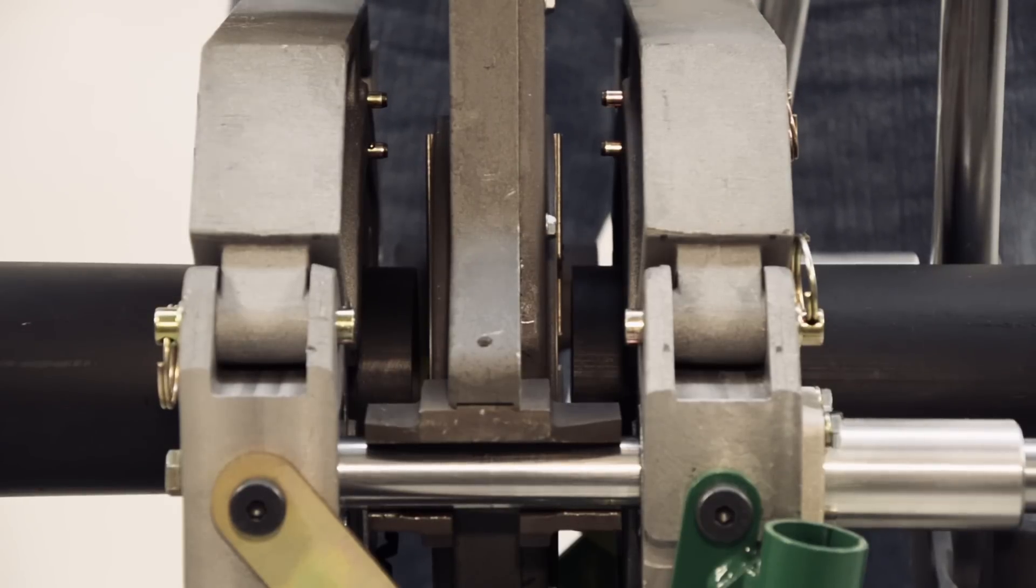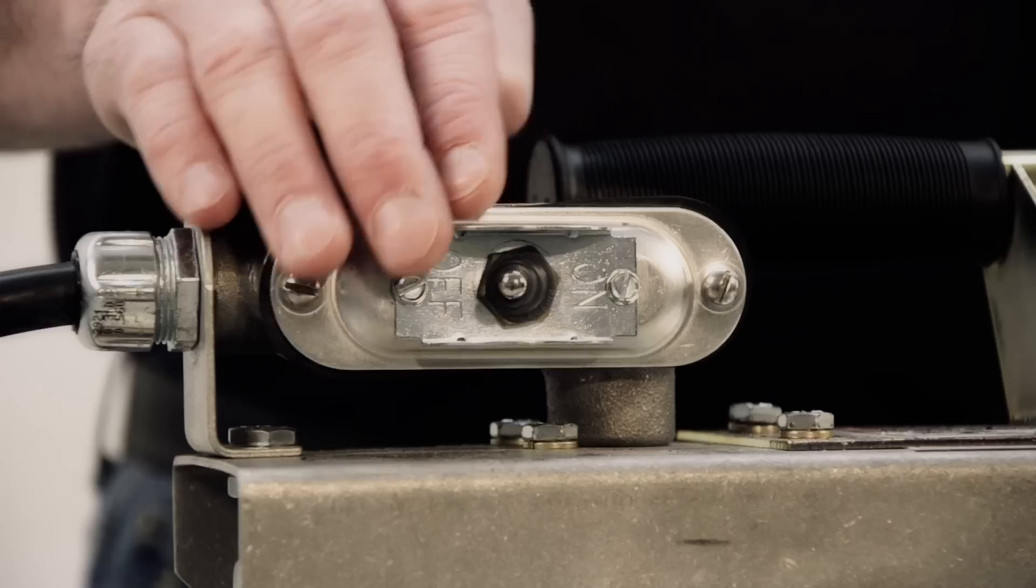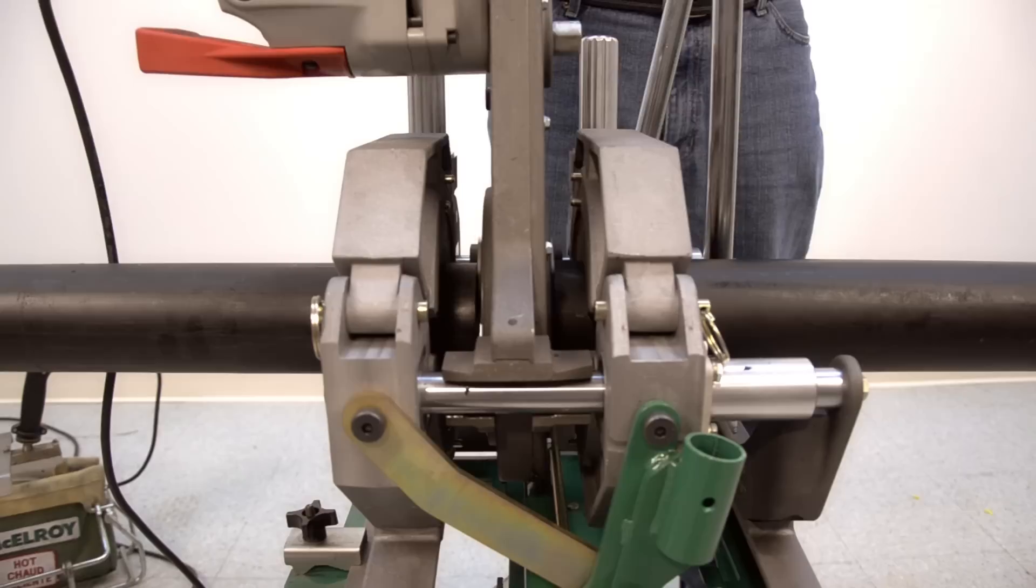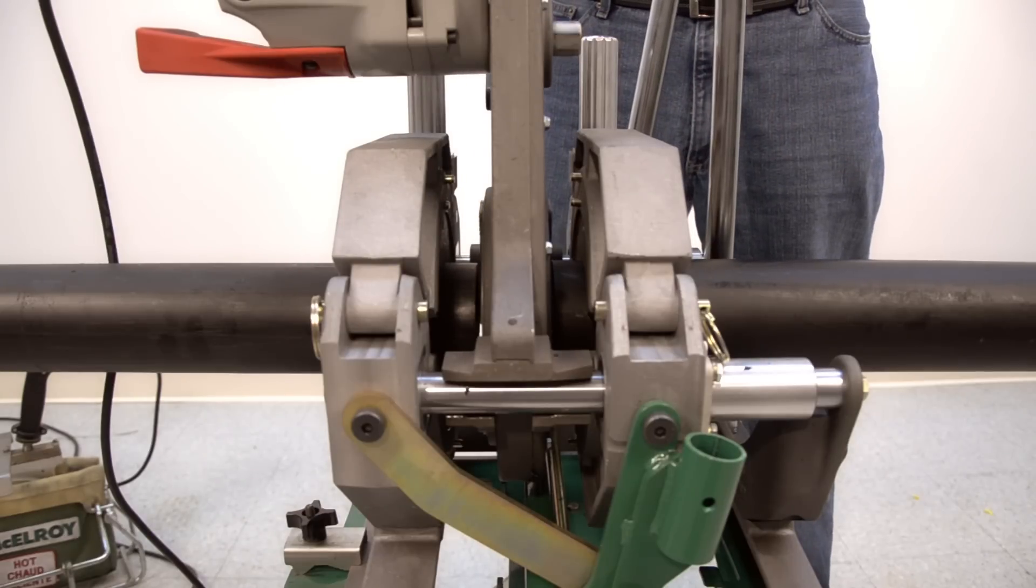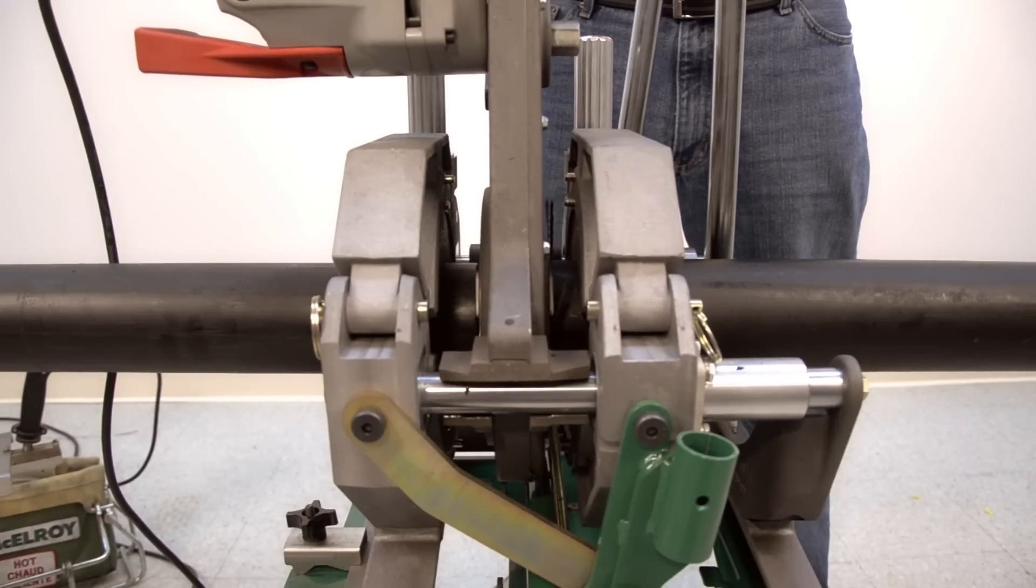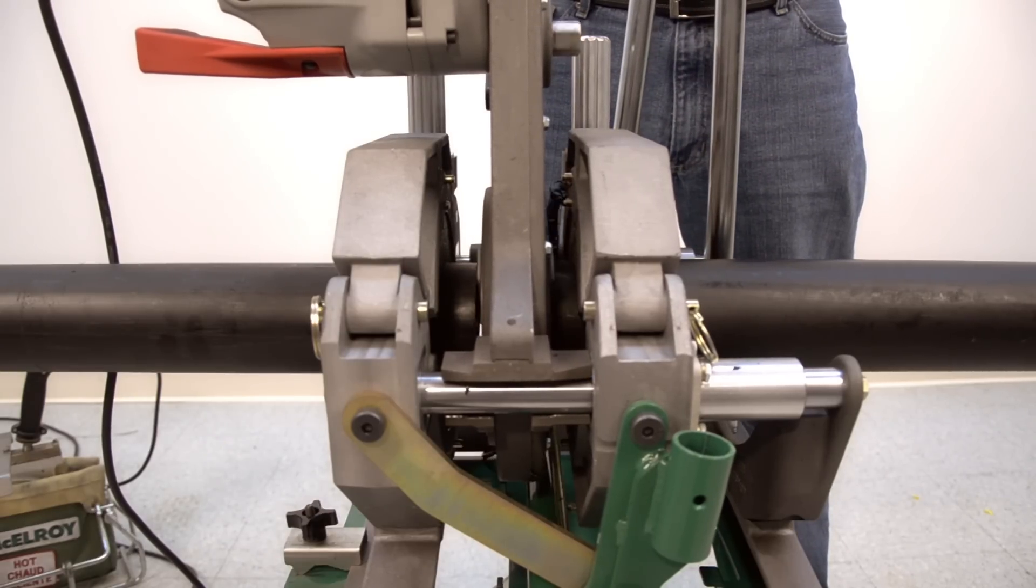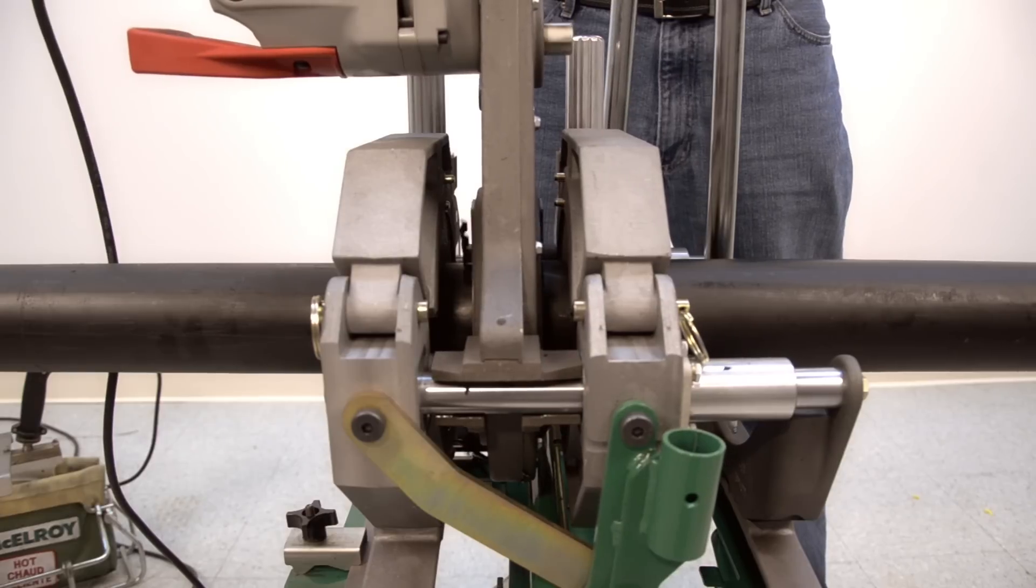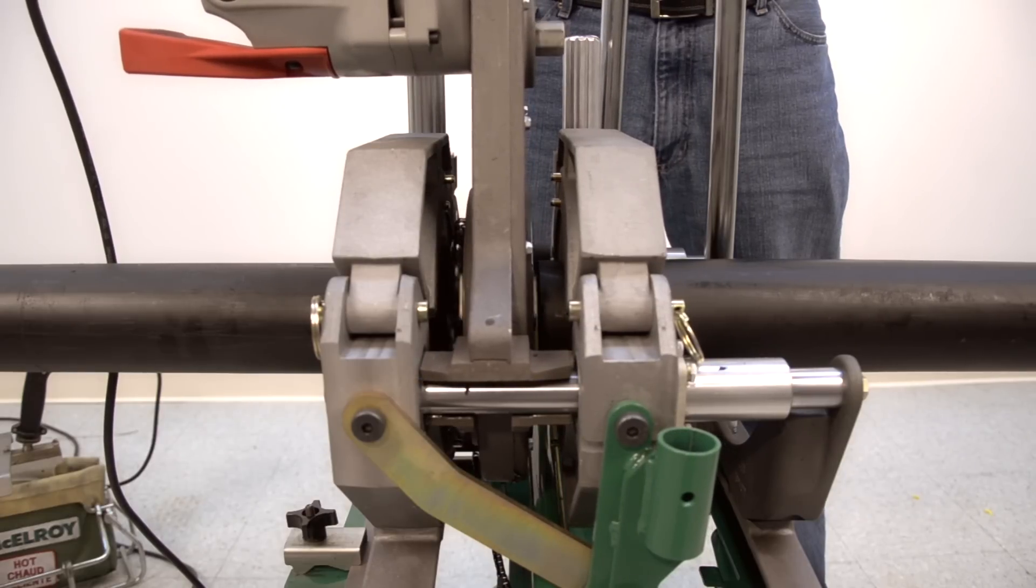Ensure the pipe ends are not making contact with the facer. Turn the facer on and bring the pipe ends against the facer with minimal pressure. Apply only enough pressure to allow the blades to shave ribbons of material from the pipe. If the facer begins to struggle, apply less force.